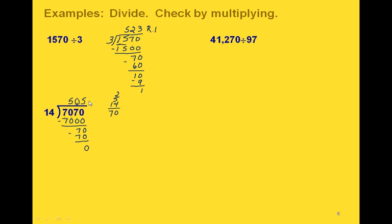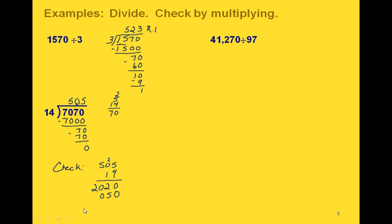So this one is just 505 with a remainder of 0. Now if we want to check this, we said we could check these by multiplying. So we would multiply 505 times 14: 5 times 4 is 20, carry the 2; 0 times 4 is 0 plus 2 is 2; then 5 times 4 is 20. With the 1, we put our 0 for a placeholder: 5 times 1 is 5, 0 times 1 is 0, and 5 times 1 is 5. Adding up our two rows we get 7,070, which is what we started with. So that one checks.